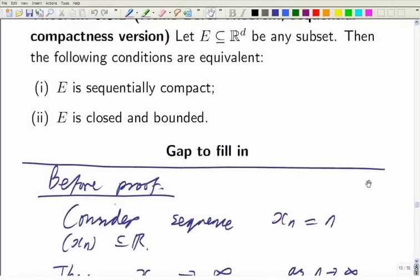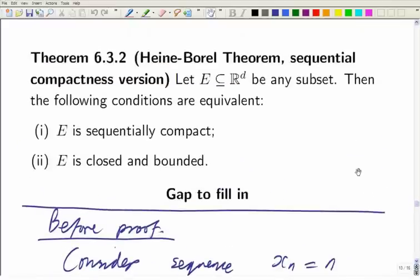Our task now is to prove the Heine-Borel theorem: E is sequentially compact if and only if E is closed and bounded. As I pointed out, one direction is easier than the other. Two implies one — closed and bounded implies sequentially compact — is relatively easy, while one implies two is a bit harder.